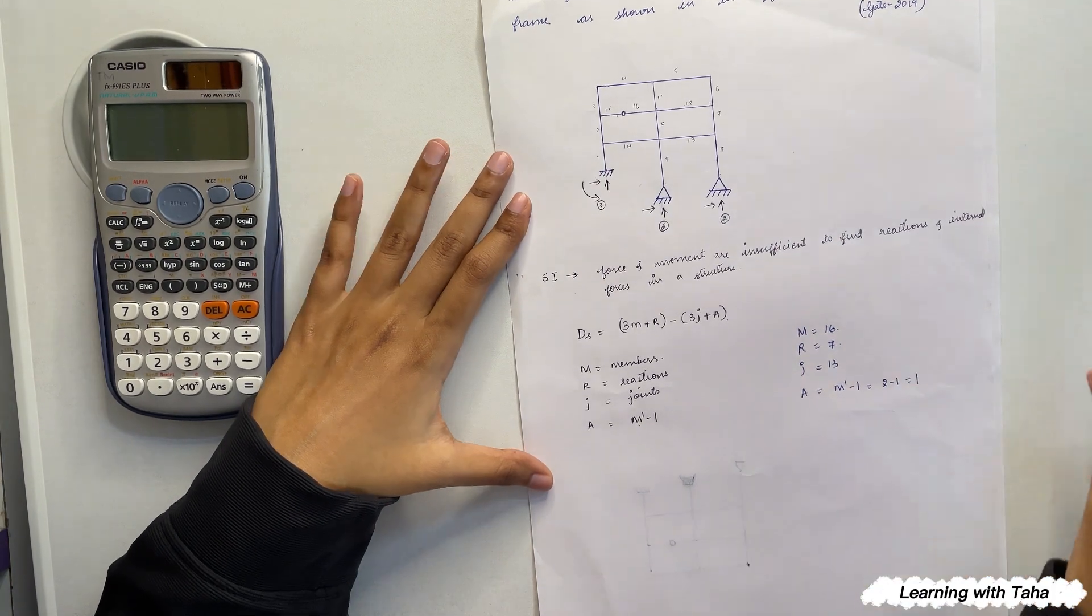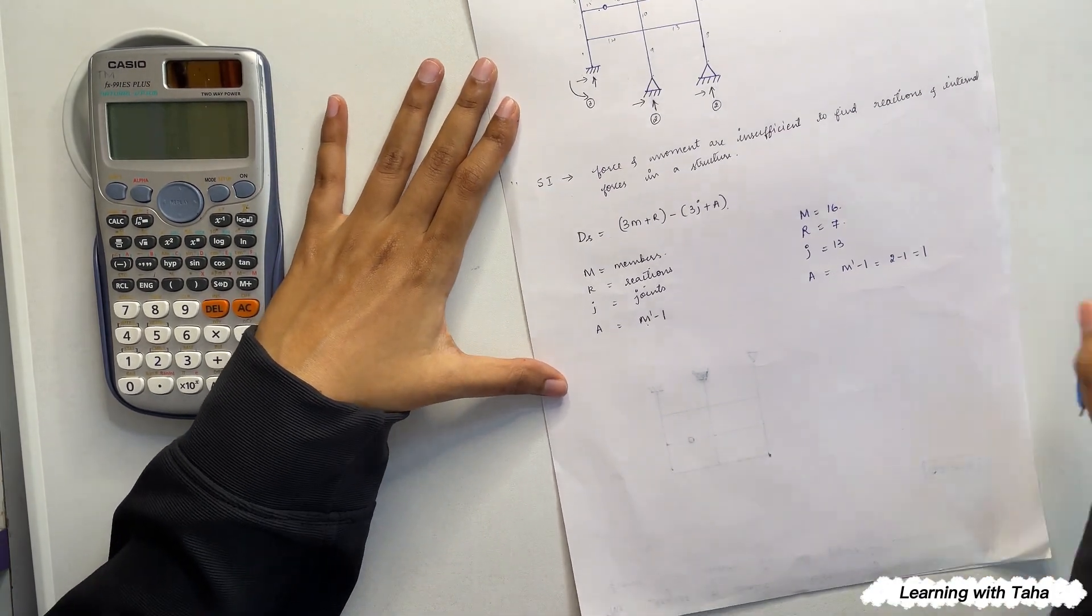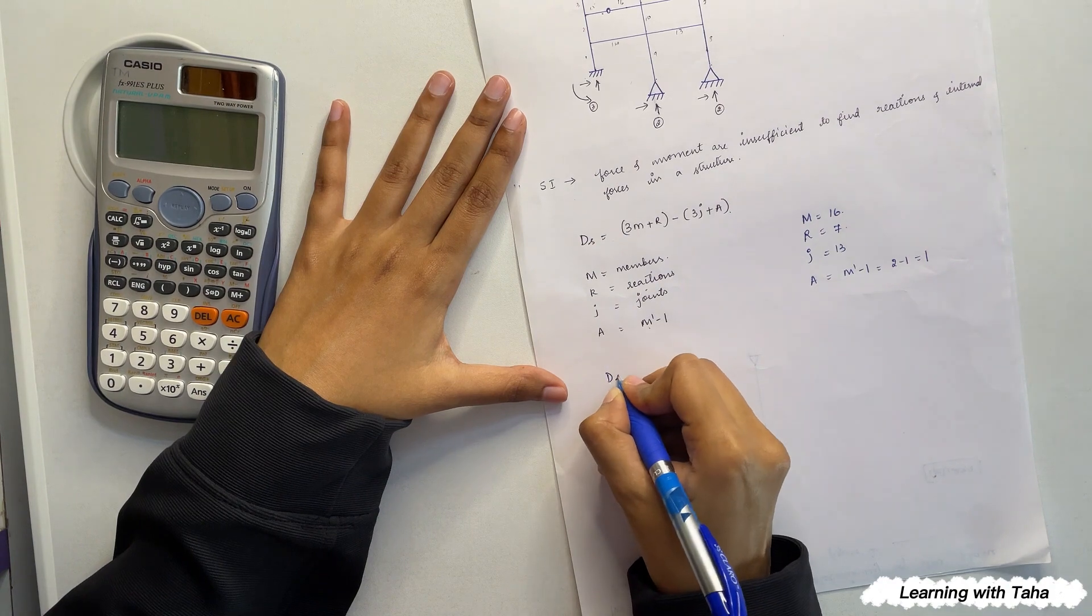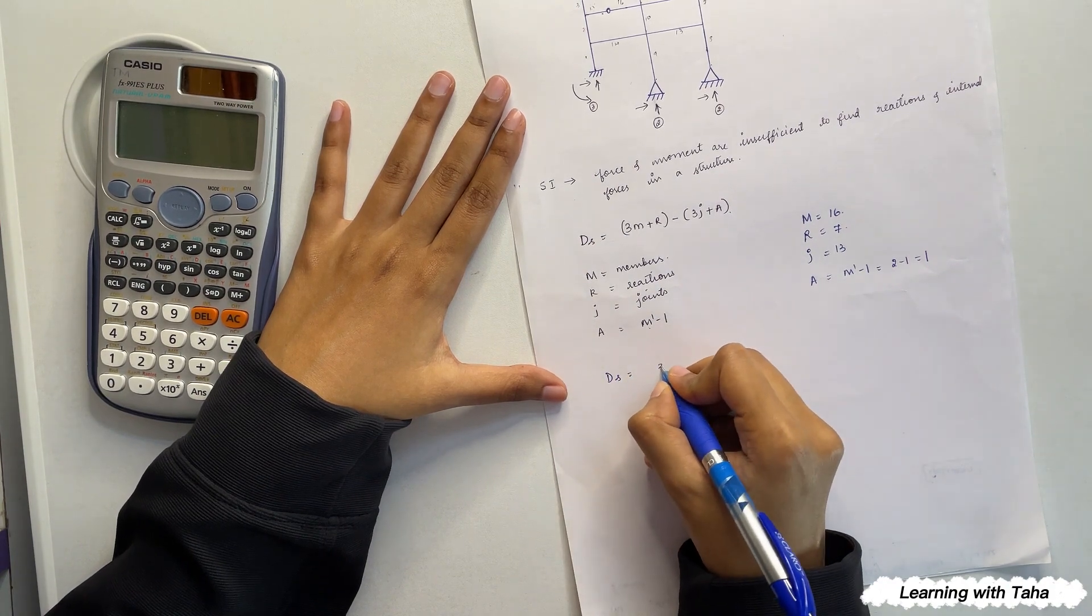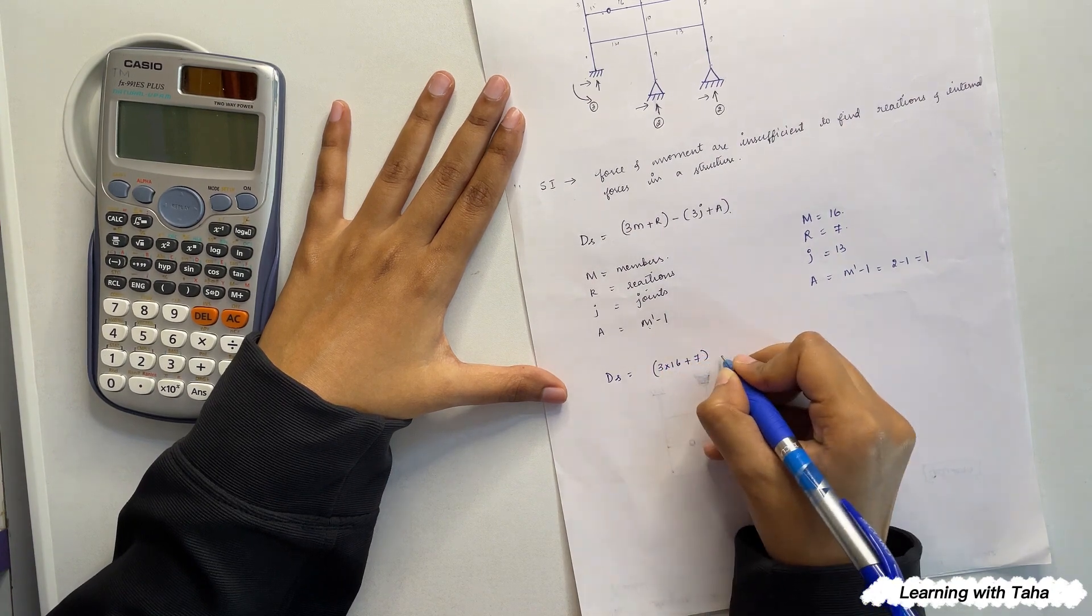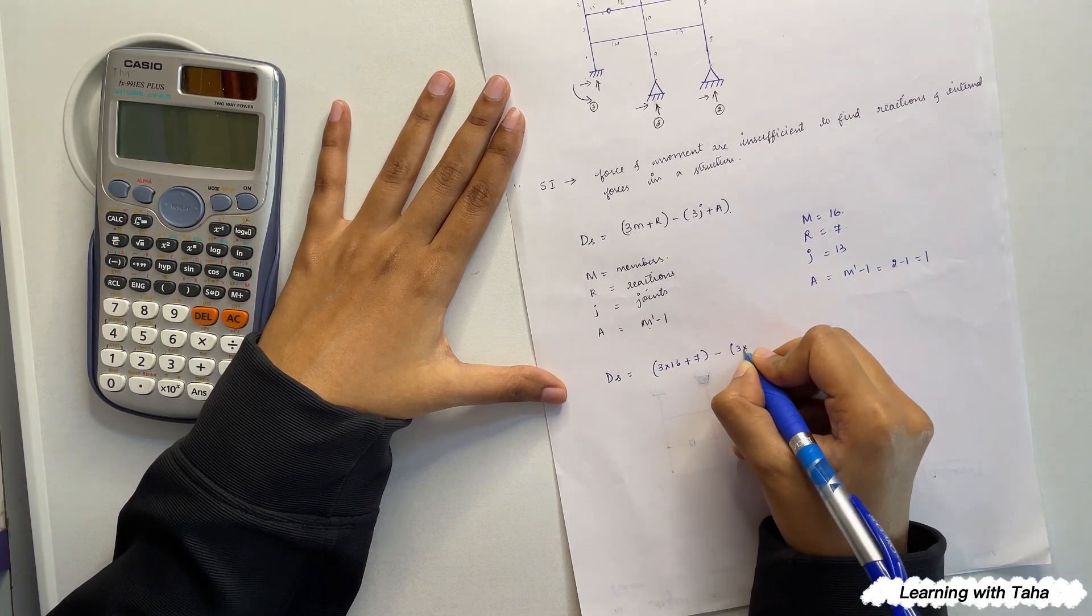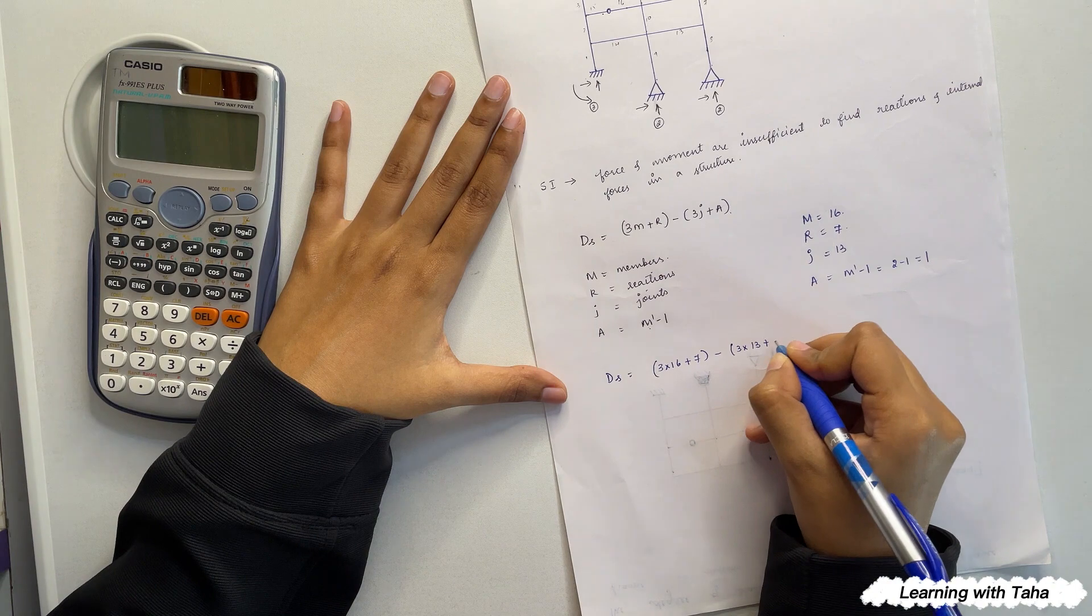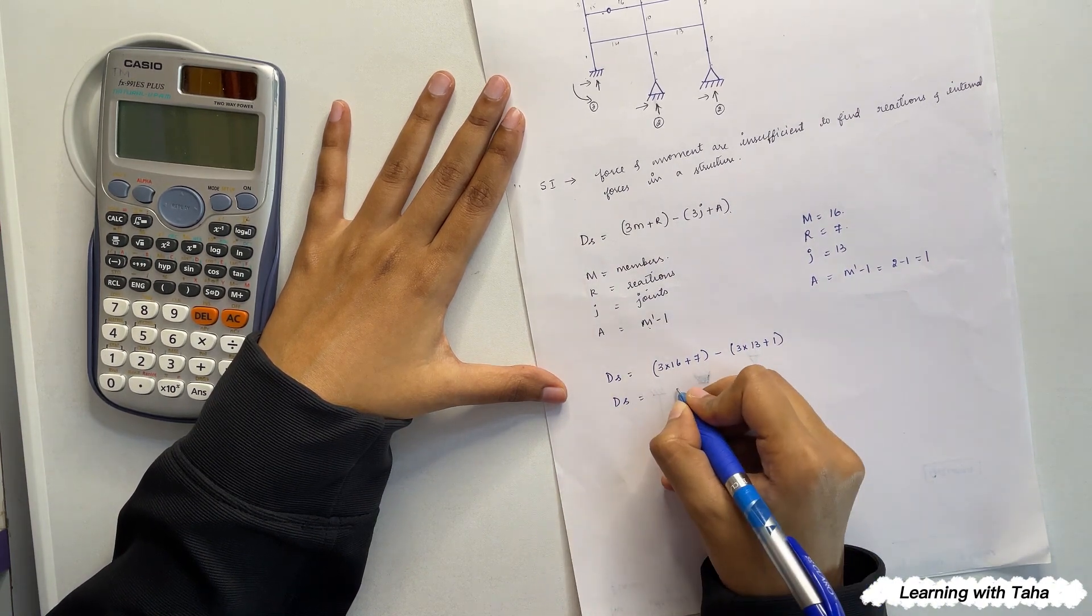Two minus one, which is one. So now we can substitute it in our equation and find the degree of static indeterminacy. That is 3 times 16 plus 7 minus 3 times 13 plus 1. So after solving this we'll be getting it as fifteen.